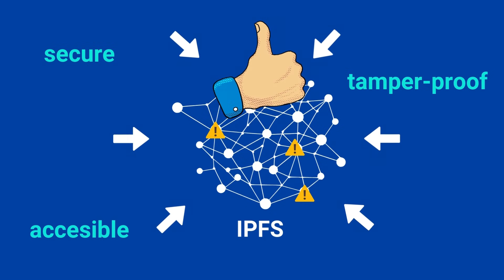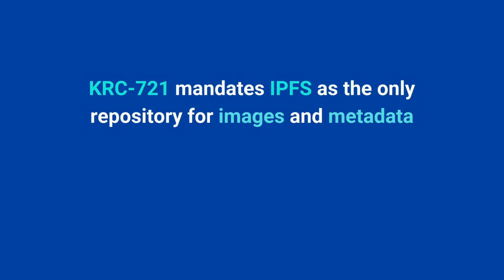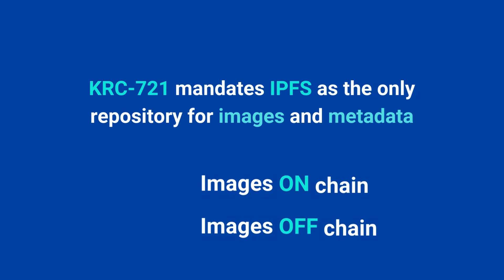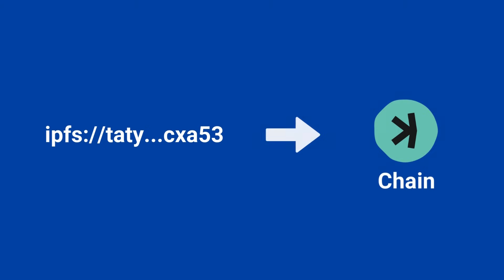Additionally, the KRC 721 standard mandates IPFS as the repository for images, meaning media cannot be stored directly on the chain. Whether you opt for one image shared across all tokens or unique images for each token, the IPFS CID will be permanently stored on the blockchain and cannot be changed after deployment.